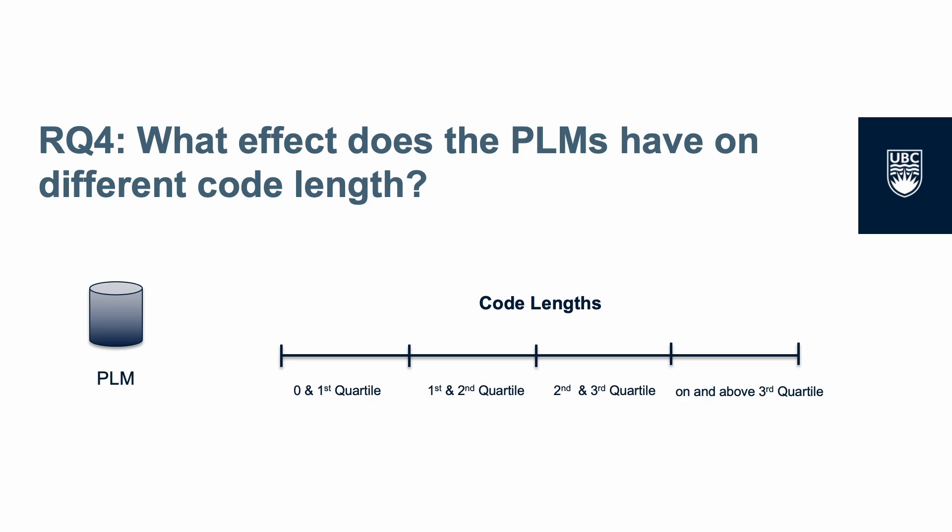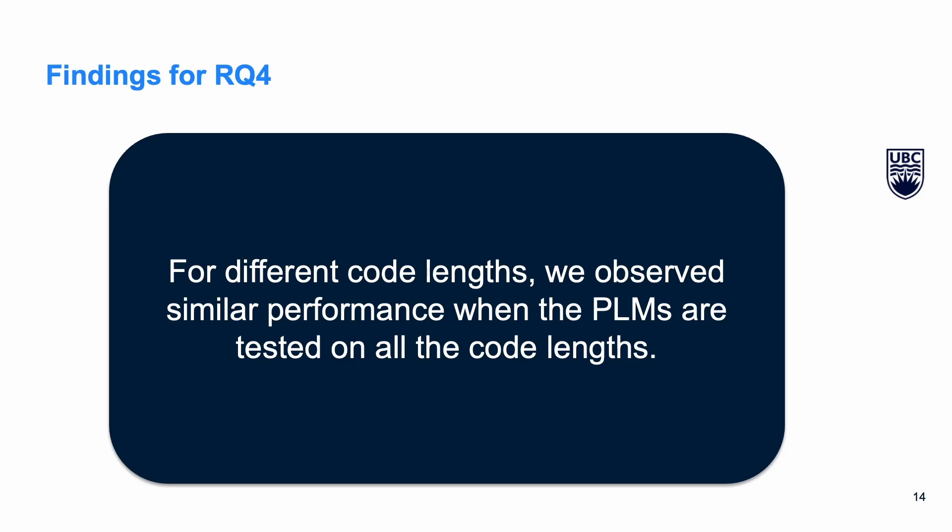In RQ4, we are interested in understanding if PLMs have any effects related to the length of the code, since developers write code in different lengths. We segregate the target test data into four different code length groups based on the length distribution of code fragments in the target programming language. We observe that for different code lengths, there is similar performance when PLMs are tested across all code length groups.